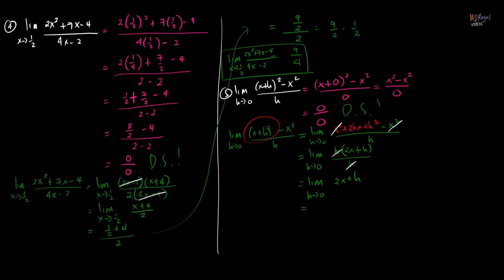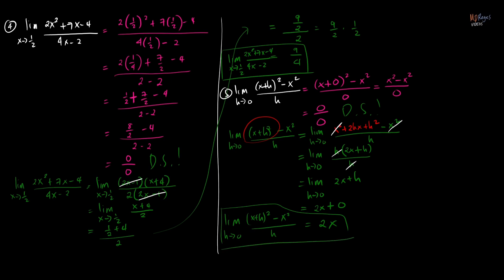Substituting 0 for h, we get 2x + 0, which is simply 2x. So the limit of [(x + h)² - x²]/h as h approaches 0 is 2x. That is the final answer.